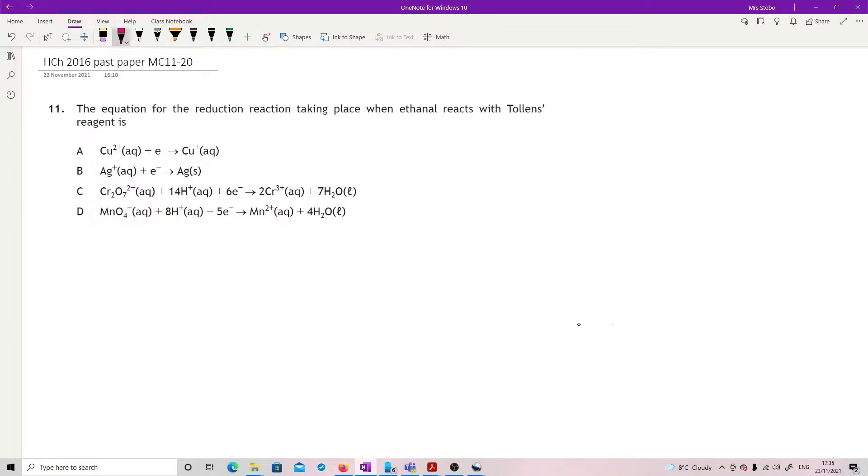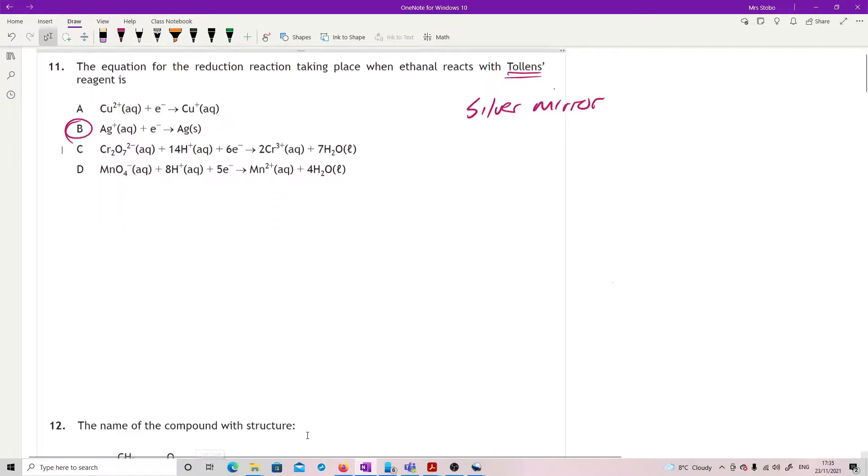Question 11: The equation for the reduction reaction taking place when ethanol reacts with Tolan's reagent. Okay, so I'm afraid you're just gonna have to know this. Tolan's is your silver mirror test, so from that you should straight away be going, well it must be this one. If you needed to do it by elimination: copper is involved in Benedict's and Fehling's, this is dichromate, and C and D are permanganate. Tolan's is a silver mirror, that's the only thing you need to know.